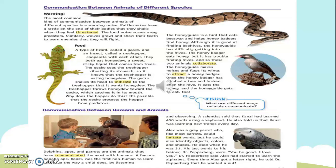Communication Between Humans and Animals. Dolphins, apes, and parrots are the animals that have communicated the most with humans. A famous bonobo ape, Kanzi, was the first non-human to learn language the way a child does, by listening and observing. A scientist said that Kanzi had learned 450 words using a keyboard and was learning new things every day. Alex was a gray parrot who, like most parrots, could imitate words, but he could also identify objects, colors, and shapes. He died when he was 31. His last words to his trainer, Dr. Pepperberg, were, 'You be good. I love you.' Dr. Pepperberg said Alex had started to learn the alphabet, and every time Alex got a letter right, he told Dr. Pepperberg that he wanted a nut.